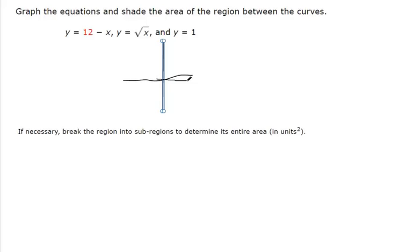We have line y equals 12 minus x. That means there's a y-intercept of 12, it has a slope of negative 1, so it's going down 1 to the right 1, down 1 to the right 1, until we hit 12 on the x, 0 on the y.